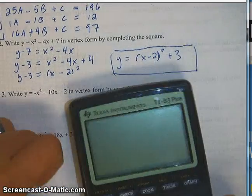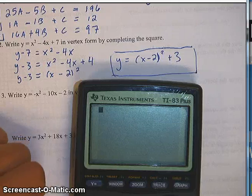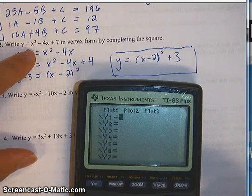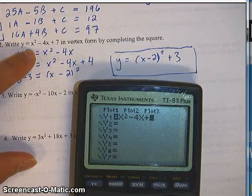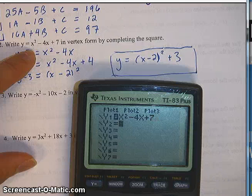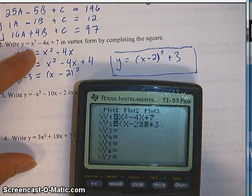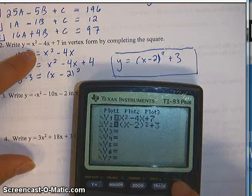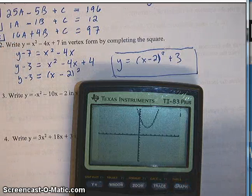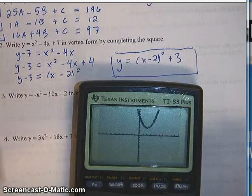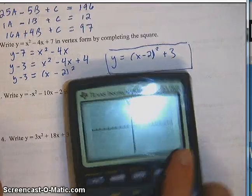Now let me show you really quickly how to double check that. If you go to your calculator, go to y equals, and type in the regular equation — the standard form — x squared minus 4x plus 7. And then the equation we just found was x minus 2 squared plus 3. I always make the second line a little bit darker. Then I graph them — if they're the same, I should only see one graph. There's the first one, there's the second one. So I'm feeling pretty good. That's how you double check it to make sure it's right.